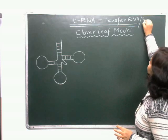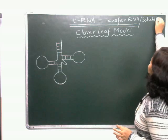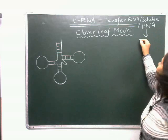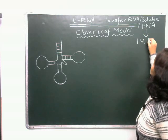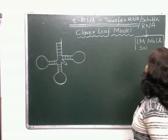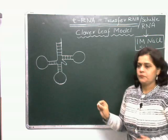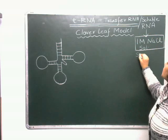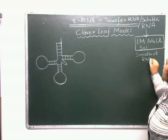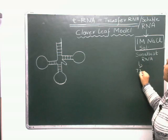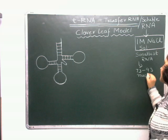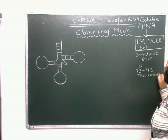It is also called soluble RNA because it is soluble in 1M solution of sodium chloride. This is the smallest of the three RNAs, smallest because it is made up of 73 to 93 nucleotides. This is the smallest size of RNA.